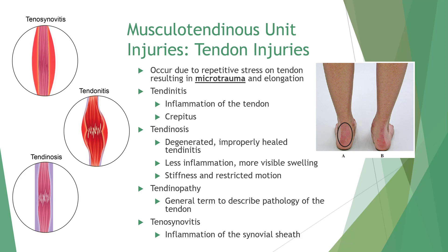Tendinopathy does not imply a particular pathology and is often used to refer to either tendonitis or tendinosis. Tendinopathy involves inflammation of the synovial sheath around the tendon. In acute cases, there is rapid onset, crepitus, and often diffuse swelling. Chronic cases result in thickening of the tendon with pain and crepitus. This often occurs in the long flexor tendons of the digits and the biceps tendon. Anti-inflammatory agents or surgical intervention may help with tenosynovitis.